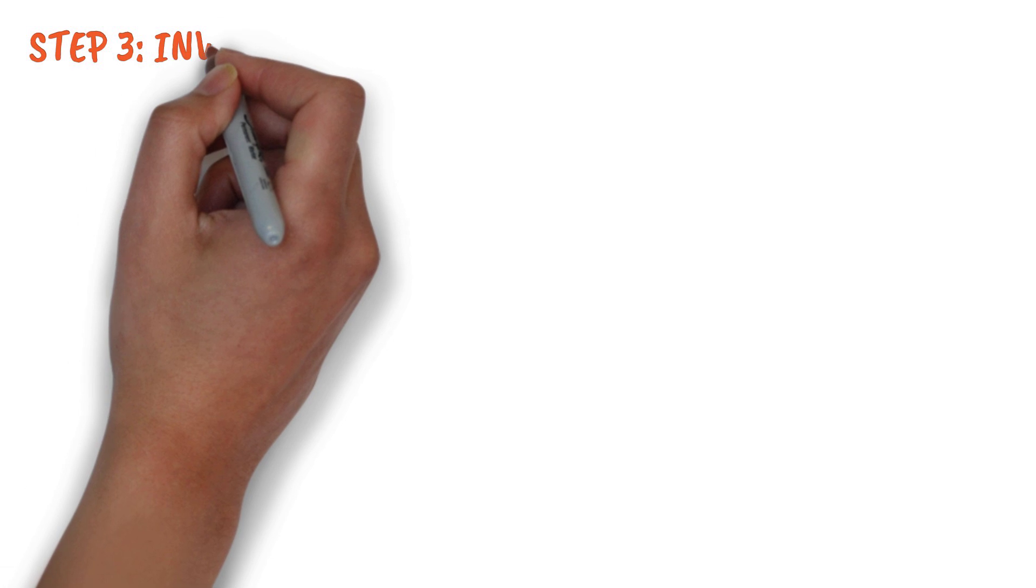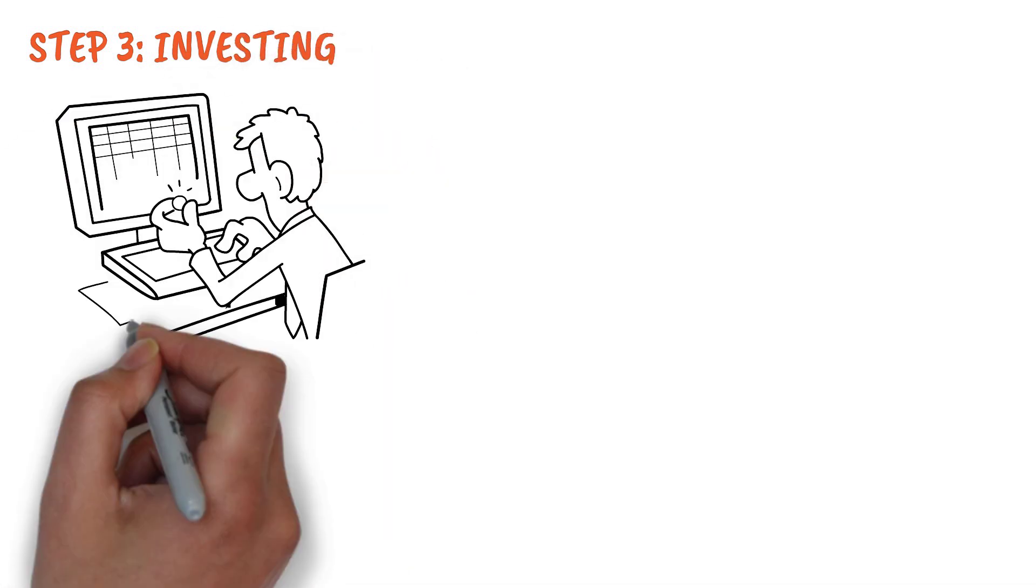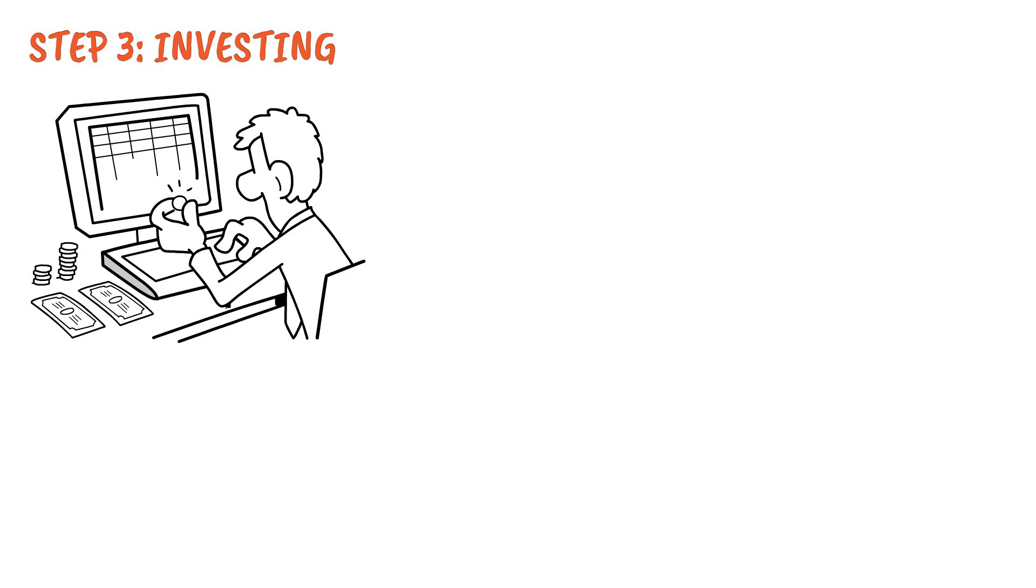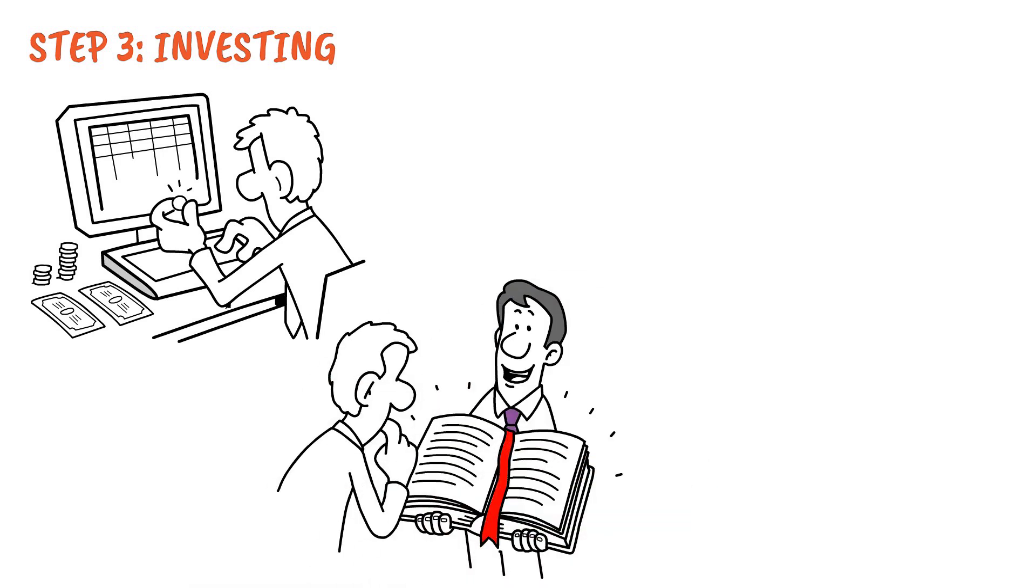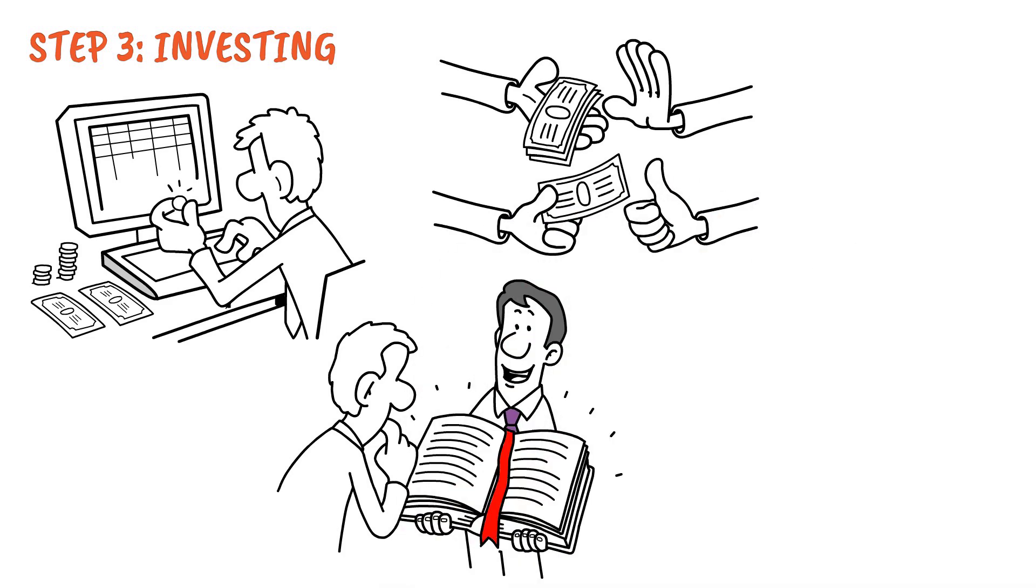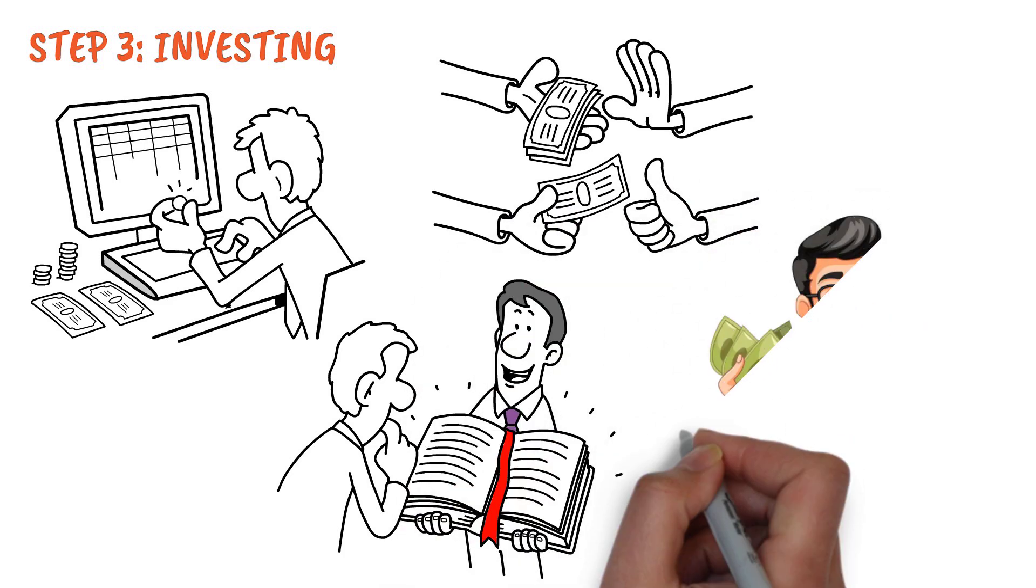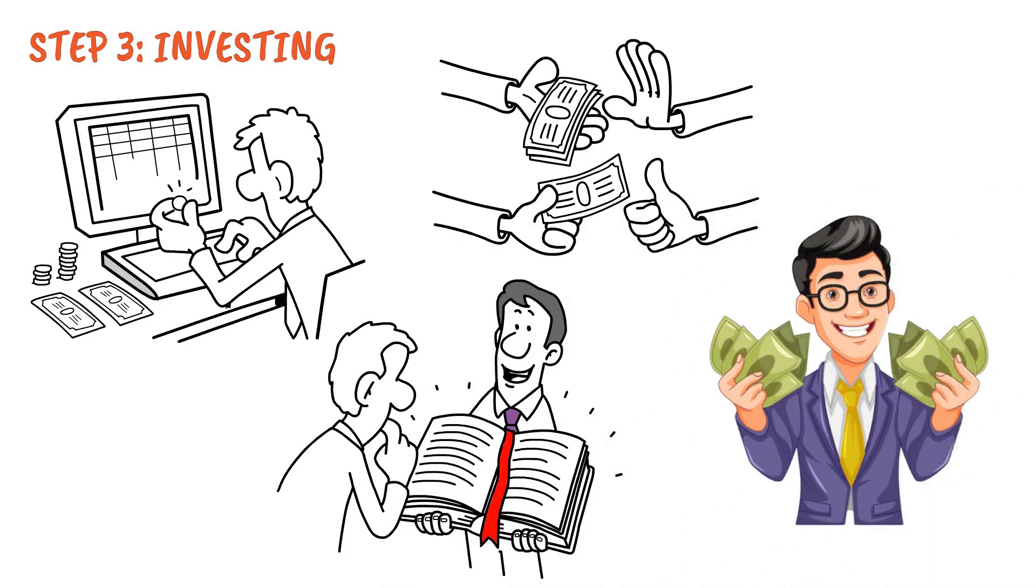Step 3: Investing. One of the key pillars to becoming a millionaire is investing. Start small, educate yourself about different investment opportunities, and seize every chance to make your money work for you. It's not about how much you make, it's about how you make it grow.